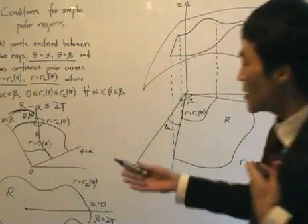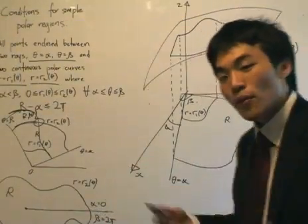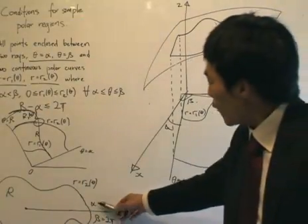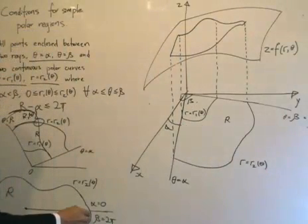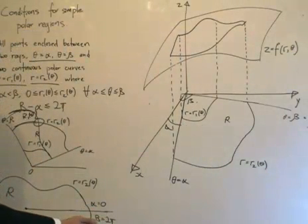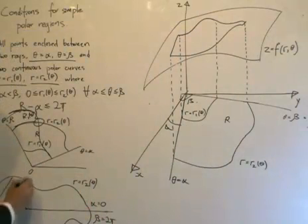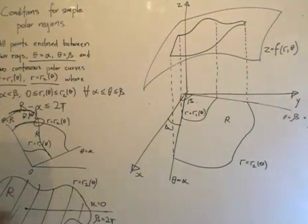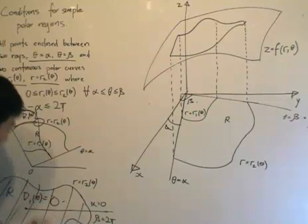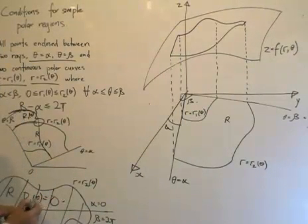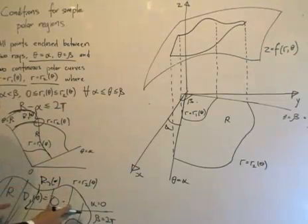A special case you'll deal with fairly often is where alpha equals 0 and beta equals 2pi — meaning the rays sweep one complete round. In this case region R is the entire area enclosed, and R1(theta) equals 0, so we integrate from the origin out to R2(theta) for all angles from 0 to 2pi.